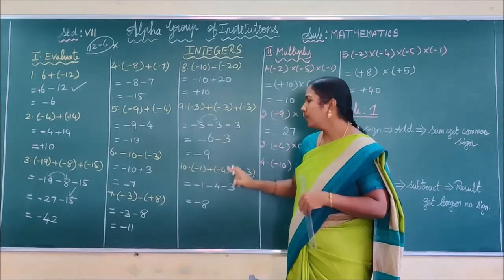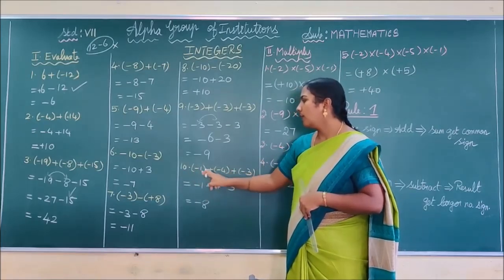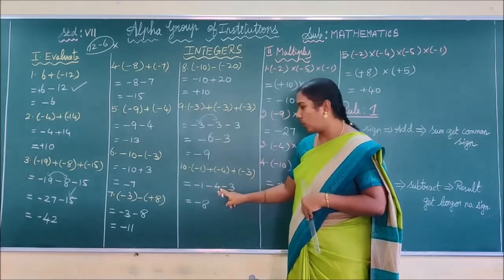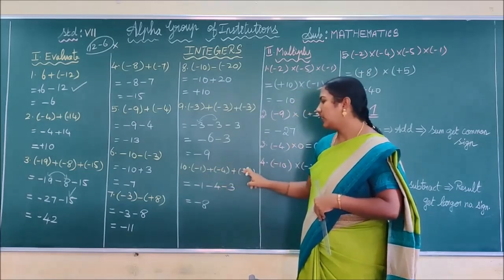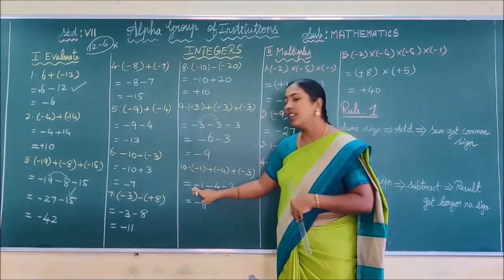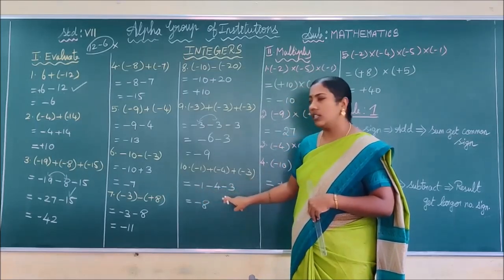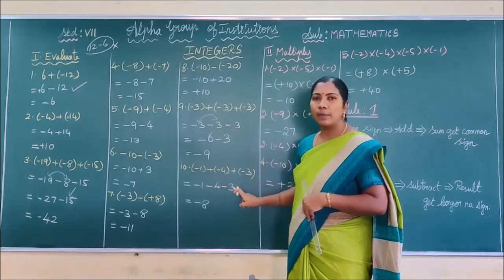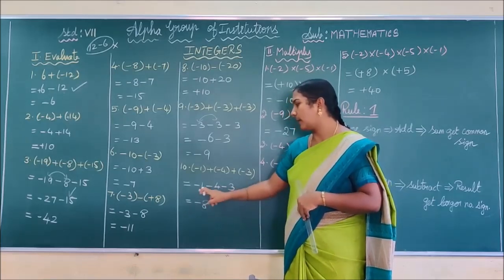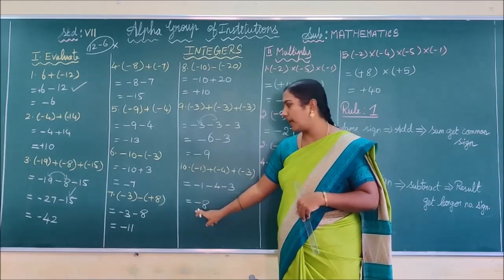Similarly: minus 1 minus (minus 4) minus (minus 3). Removing brackets: minus into minus gives plus 4, minus into minus gives plus 3. So: minus 1 plus 4 plus 3. Now opposite signs — but wait: actually all become: minus 1, plus 4, plus 3. The integers are of mixed signs, so apply the rules accordingly: 1 plus 4 = 5, then 5 plus 3 = 8, and the result takes the common sign. The answer is minus 8.